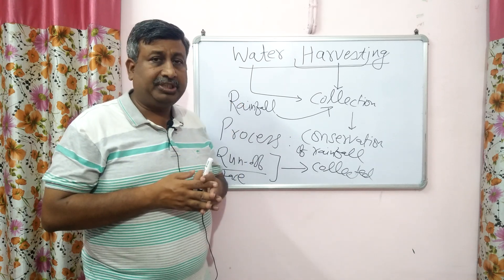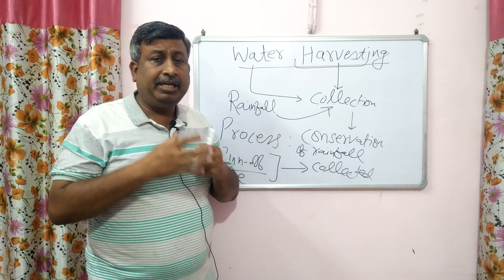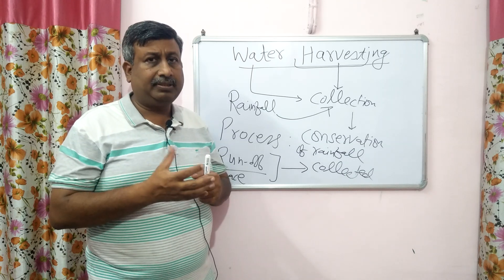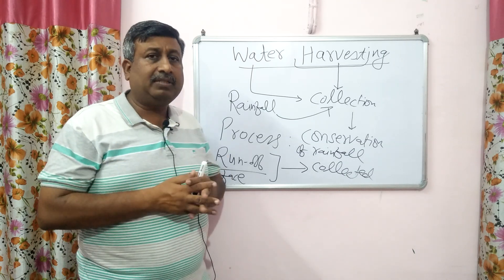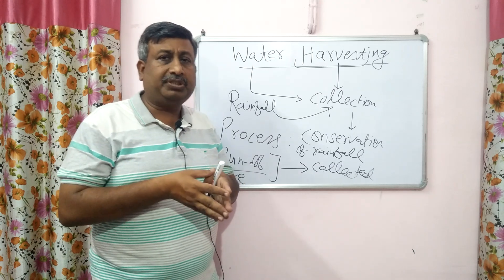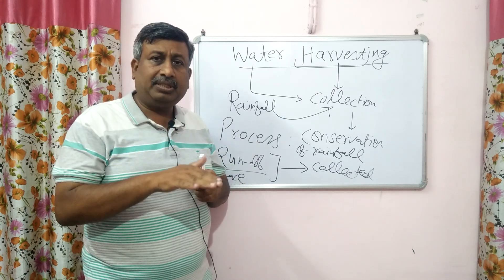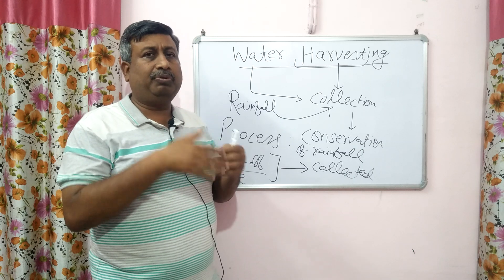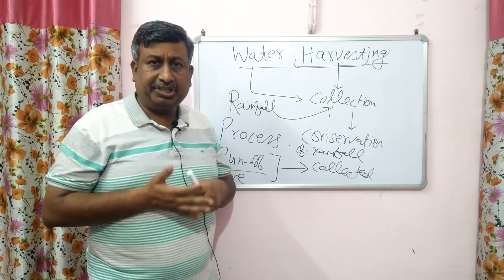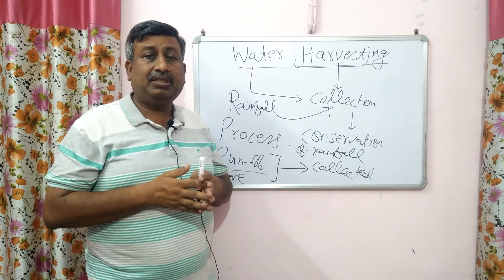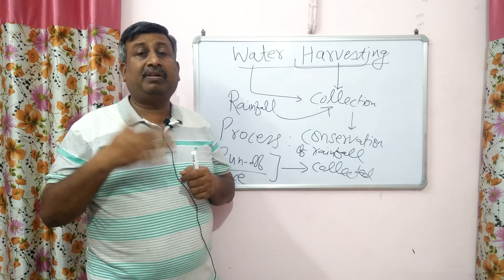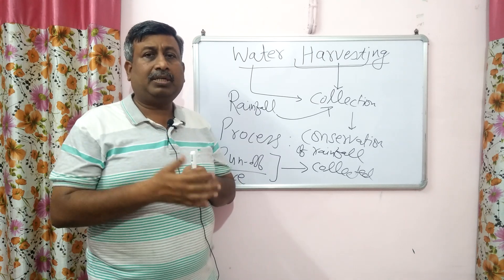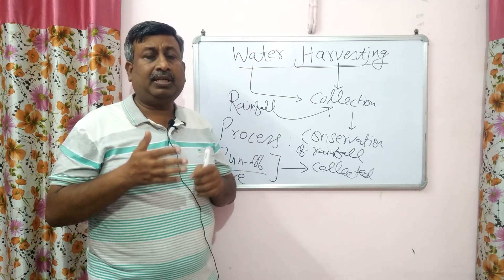Water harvesting is done for many purposes. First, this water is used for irrigation in the same season — for life-saving irrigation. If we have water collected and rainfall is not going to happen and the crop is dying, we will use it for life-saving irrigation. It can also be used for irrigation in the next season — post rainy season, rabi season, or winter season. Because in winter season in our country, rainfall is very less, so this water can be used for post rainy or winter season irrigation.